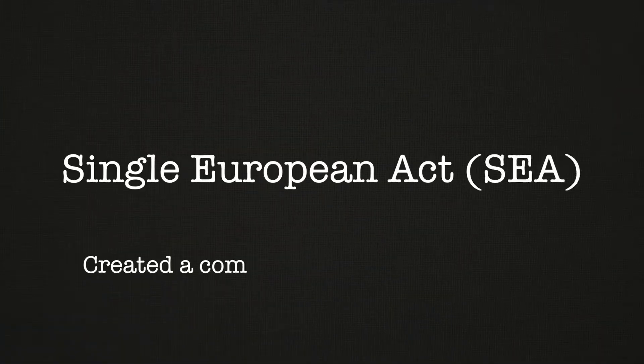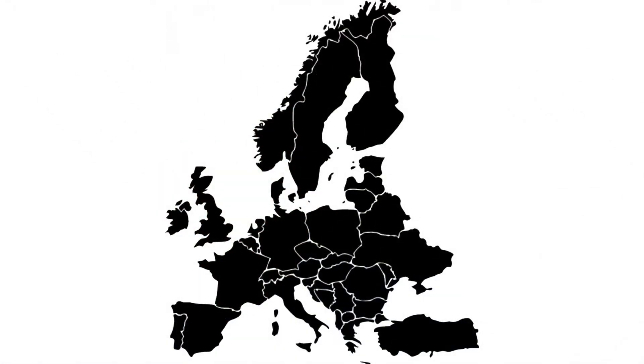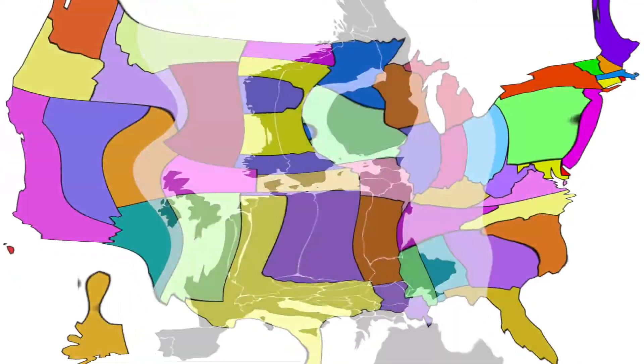One of the reasons countries want to belong to the European Union is because of the open borders and the common market that you get when you join. There already had been a common market in a number of commodities. The idea was that on January 1, 1992, the European economy would function like the United States economy — there would be no tariffs, no taxes, or anything across country borders, just like in the United States, where there are no tariffs across state borders or taxes of one state on another state's citizens.